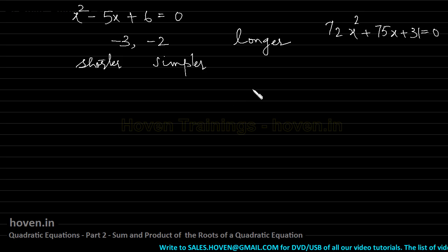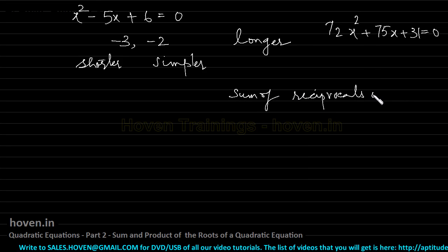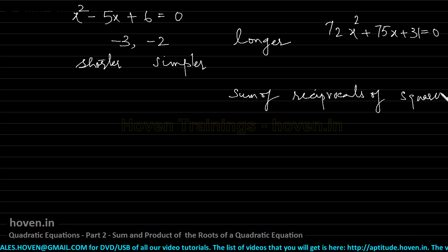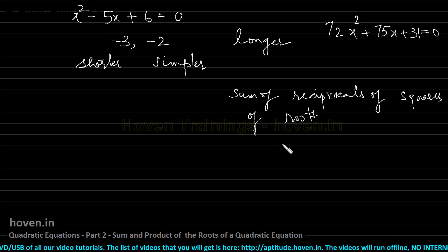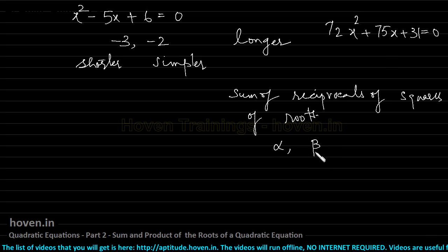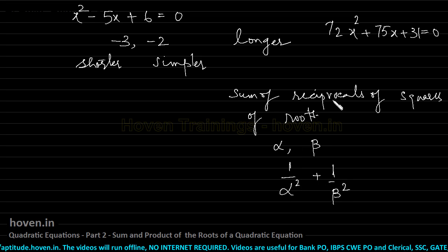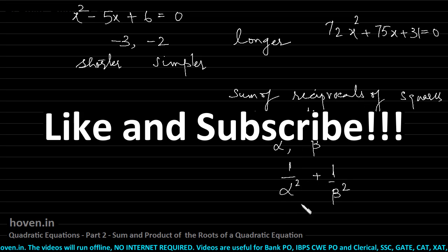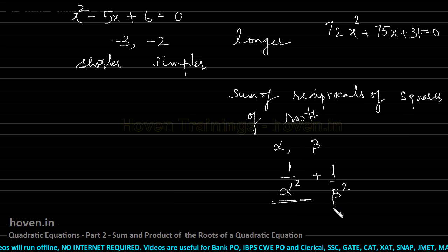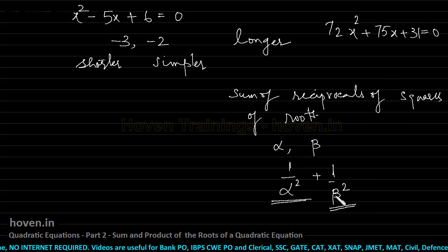Sometimes the question could be also to find the sum of reciprocals of squares of the roots. Now this is even more complicated. So what he in effect means is that if one root is alpha, the other root is beta. Suppose these are some numbers alpha and beta. Then he says we have to find out 1 by alpha square plus 1 by beta square. This is sum of reciprocals of squares of roots. This is reciprocal of square of first root. This is reciprocal of square of second root.